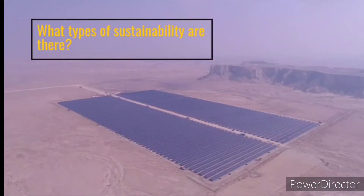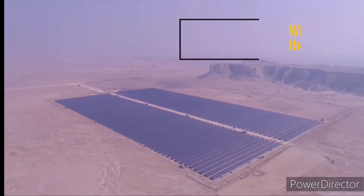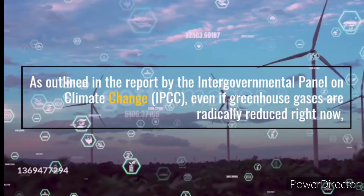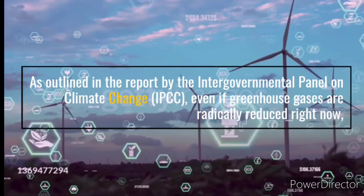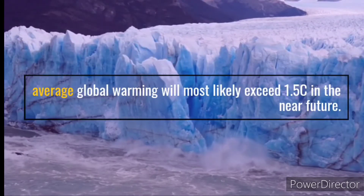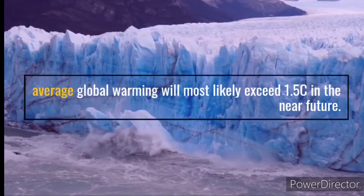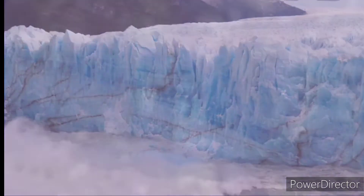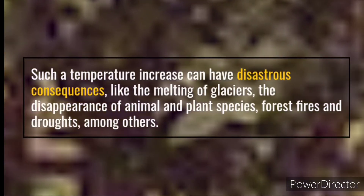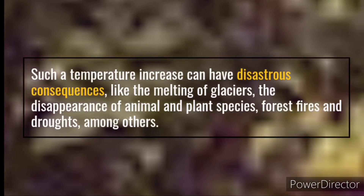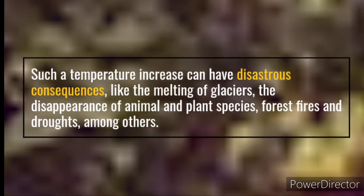What types of sustainability are there? As outlined in the report by the Intergovernmental Panel on Climate Change (IPCC), even if greenhouse gases are radically reduced right now, average global warming will most likely exceed 1.5°C in the near future. Such a temperature increase can have disastrous consequences, like the melting of glaciers, the disappearance of animal and plant species, forest fires and droughts, among others.